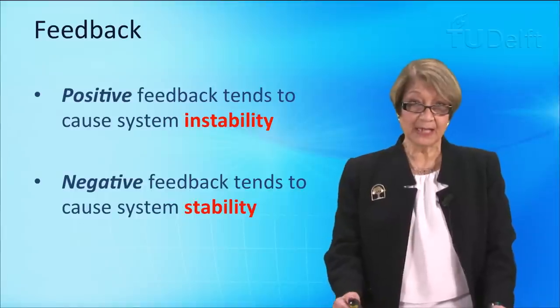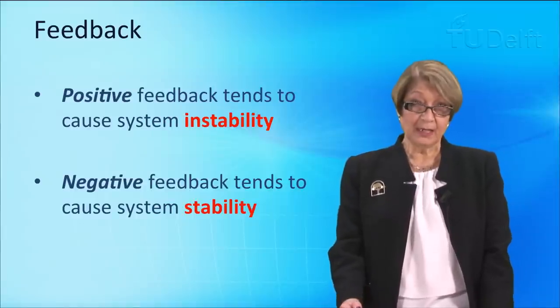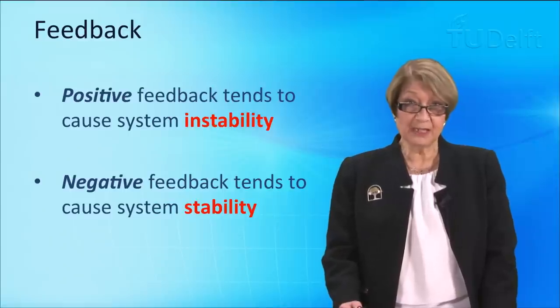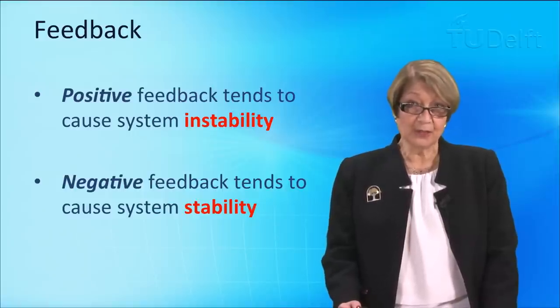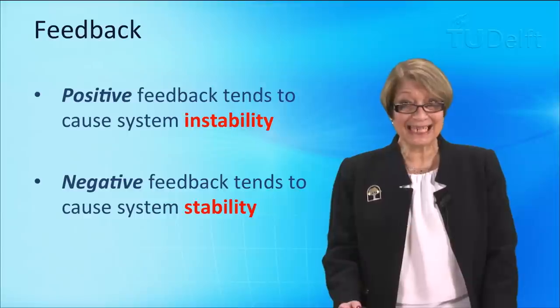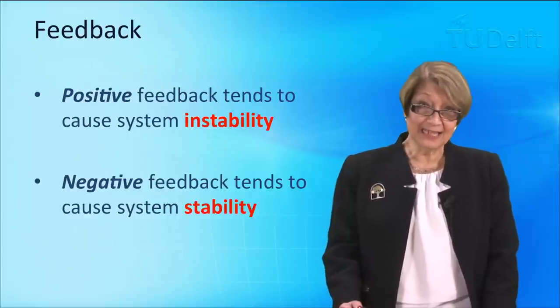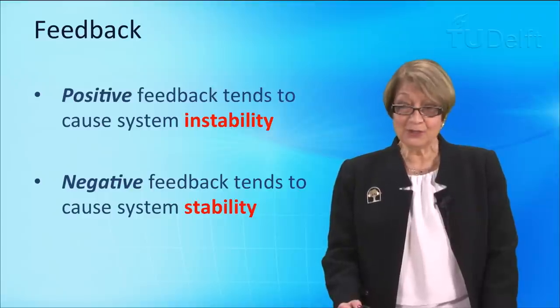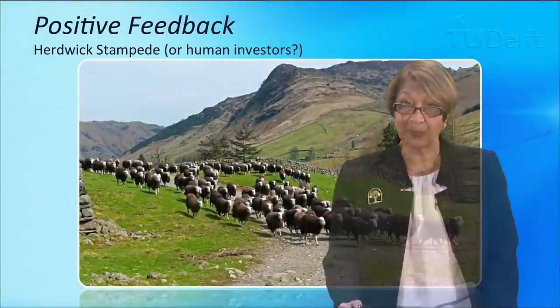One of the first characteristics I want to explain when we move beyond connectivity and interdependence is feedback. There are two types of feedback and I want to actually explain the technical difference between positive feedback and negative feedback. Now, counter-intuitively, positive feedback tends to cause system instability, while negative feedback tends to cause system stability. Let me explain what that means. First of all, let's look at positive feedback.